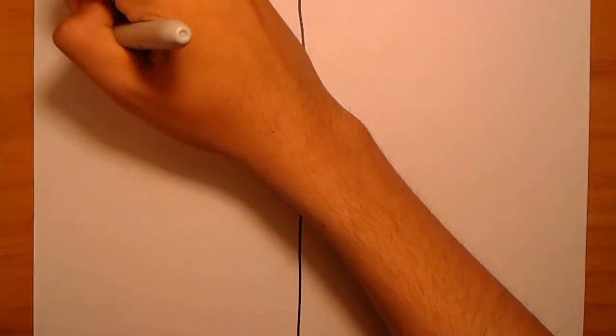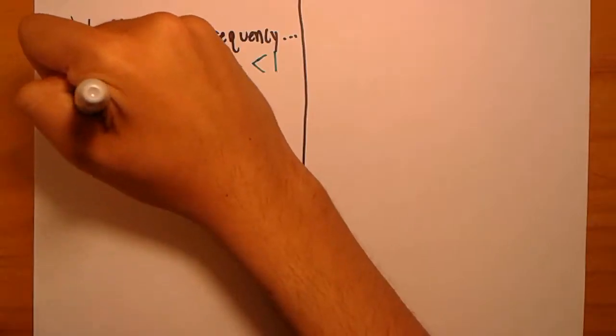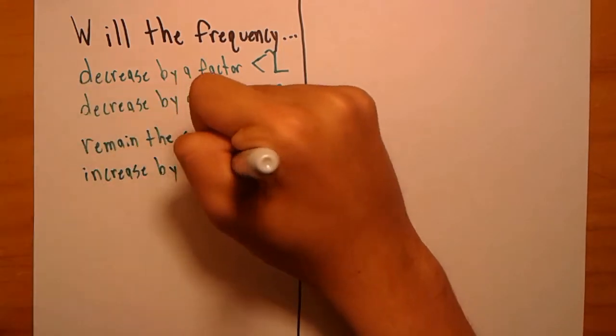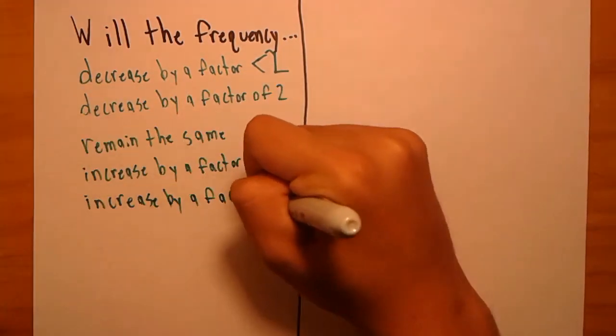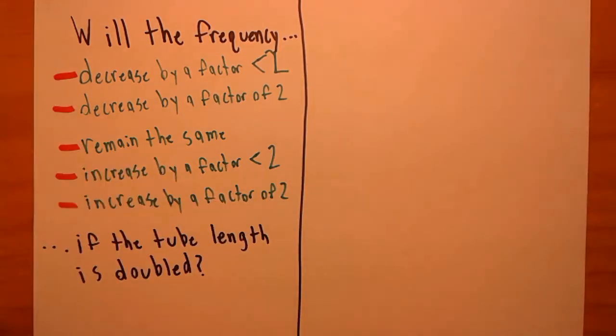Now it's time for our viewers to make a prediction. If we double the length of the tube by covering more holes, will the frequency decrease by a factor of less than two, decrease by a factor of two, remain the same, increase by a factor of less than two, or increase by a factor of two? Make your prediction now.